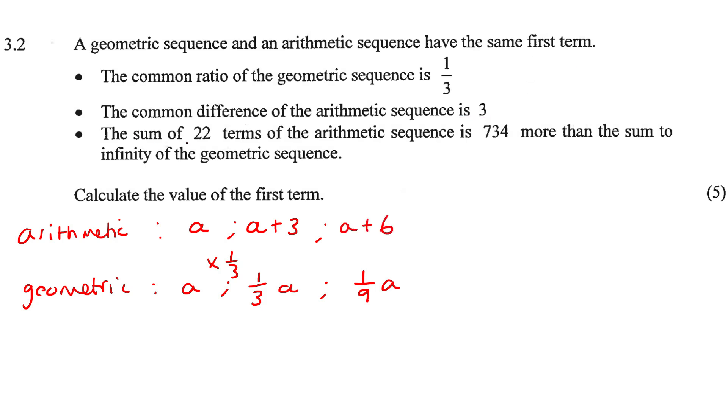Okay, now they tell us that the sum of 22 terms of the arithmetic is 734 more than the sum to infinity of the geometric. Okay, so the sum, so check this out. The sum of 22 terms of the arithmetic is going to be the same as the sum to infinity of the geometric, and then you must just add 734.